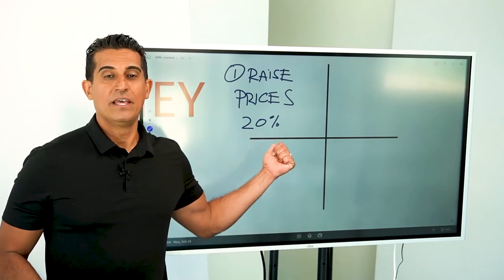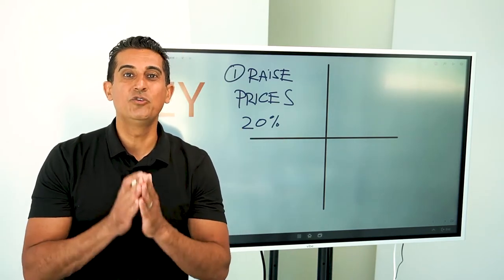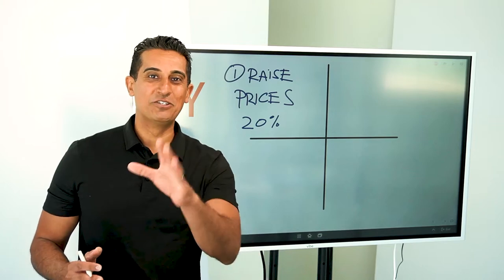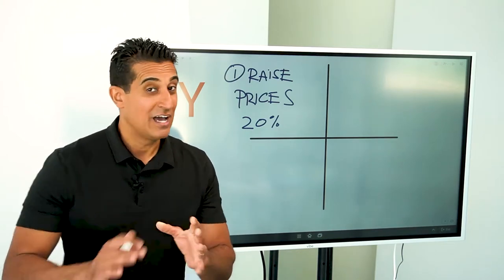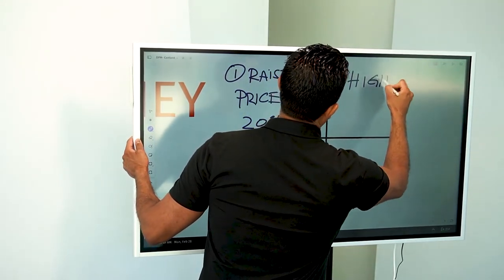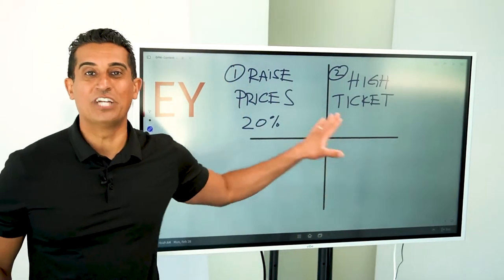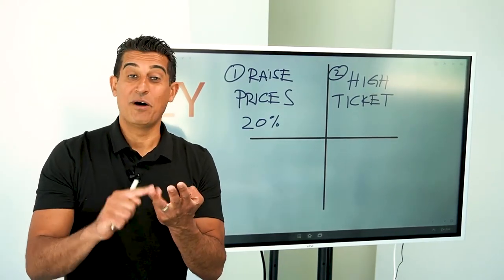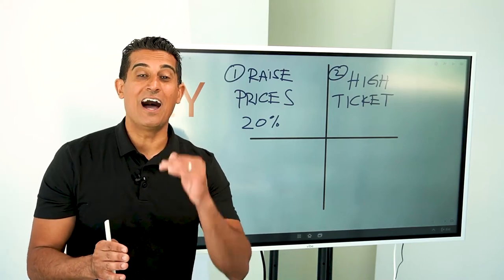Raise your prices by 20%, and you don't have to do it across every procedure. Focus on the procedures you want to do more of in your practice. That doesn't mean more MOD composites or buccal composites — focus on higher-ticket procedures. That's the second part of the framework. Higher revenue-generating procedures like Invisalign, veneers, full-mouth dentistry, full-mouth reconstruction, implants, mini implants, and overdentures. Focus on procedures in the higher-ticket range.